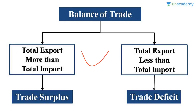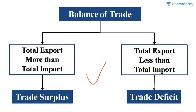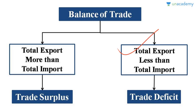In the concept of balance of trade, we are interested in knowing the difference between the total export and total import of a country. When the total export of a country is more than its total import, we say that the situation is of trade surplus. When the total export is less than total import, the situation is called trade deficit.